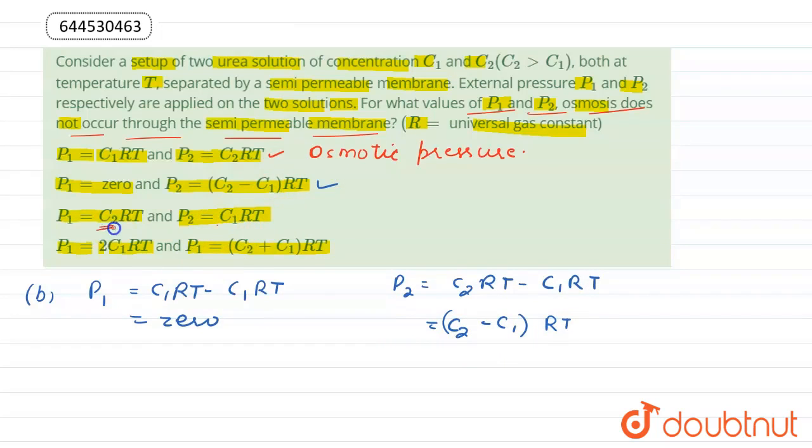In option C, the concentrations are swapped: P1 = C2RT and P2 = C1RT. So there would be osmosis, making this option incorrect.